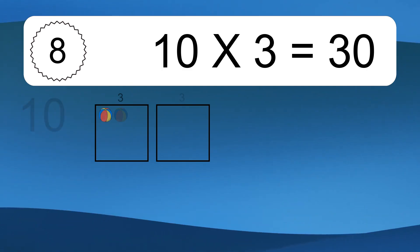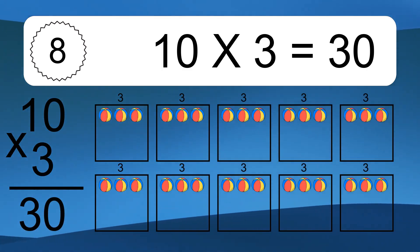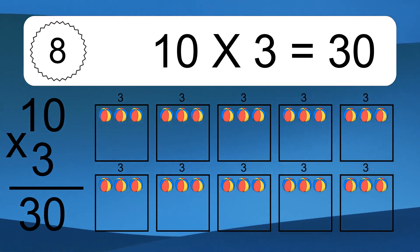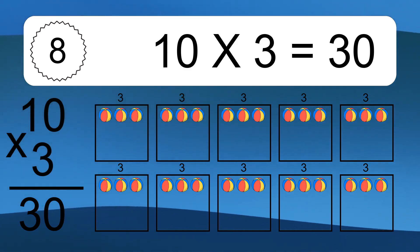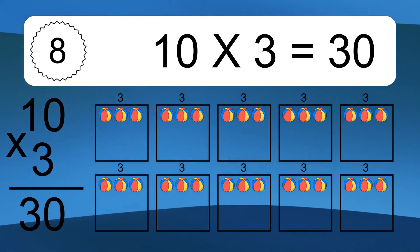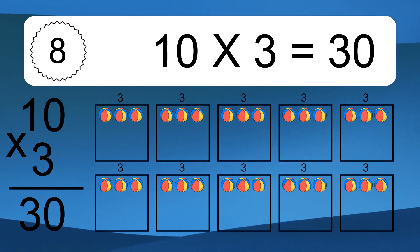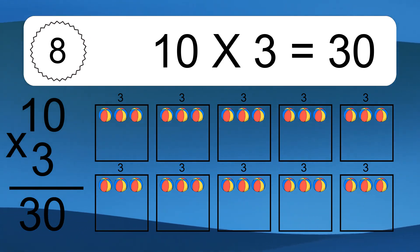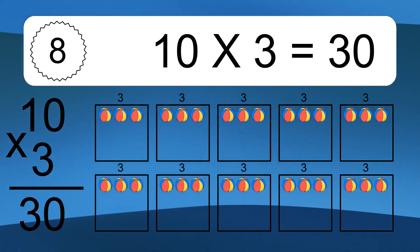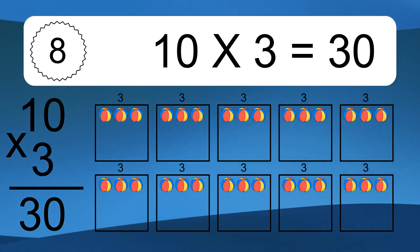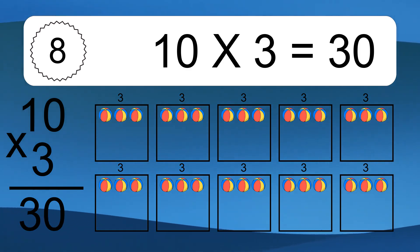10 times 3 equals 30. We have 10 boxes, and each box has 3 colorful balls inside. If you count all the balls in all the boxes together, you will have 10 times 3 balls. This equals 30 balls.